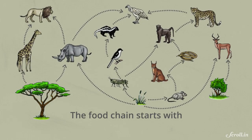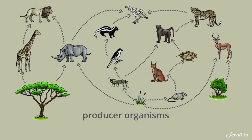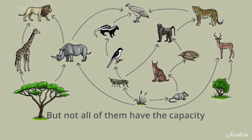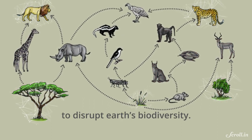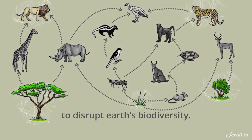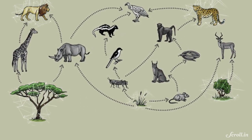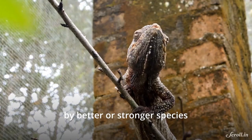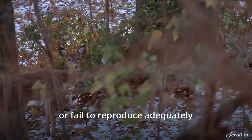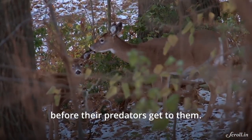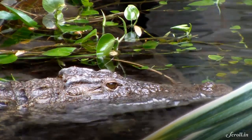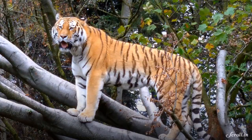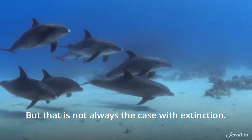The food chain starts with producer organisms and ends with apex predator organisms. But not all of them have the capacity to disrupt Earth's biodiversity. Some are simply replaced by better or stronger species, or fail to reproduce adequately before their predators get to them. This process is called natural selection. But that is not always the case with extinction.